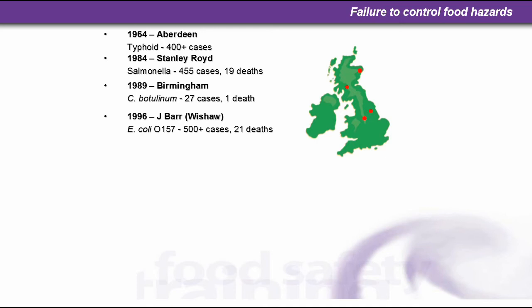In 1996 in Wishaw, Scotland, in what was then the world's worst case of E. coli food poisoning caused by E. coli O157, there were over 500 cases and 21 deaths. In 2005 in South Wales, the same strain of E. coli O157 resulted in 156 cases and 1 death of a young child.